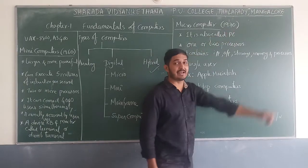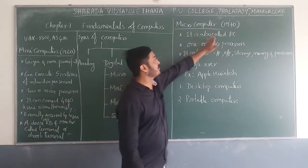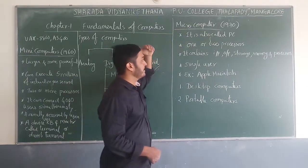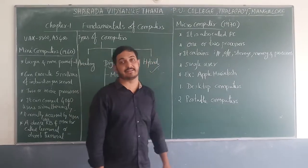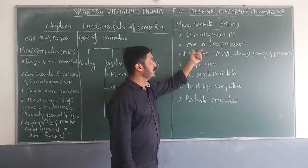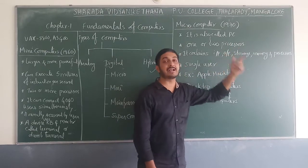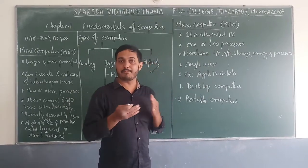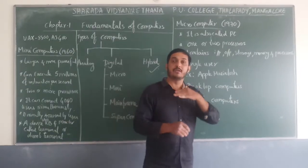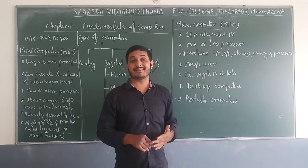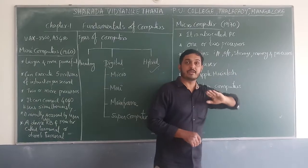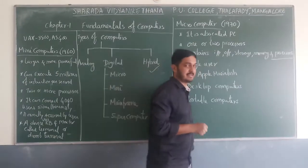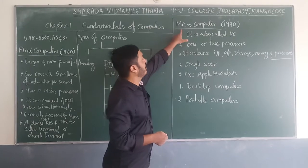Micro computers were developed after 1970, and are also called PC — personal computer — or workstation. Under micro computer, it may use one or two processors, and it contains an input unit, output unit, storage memory, and processors. Input units include keyboard, mouse, and joystick; output units include printer and monitor; and it uses secondary storage and main memory like RAM and ROM.